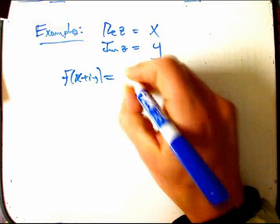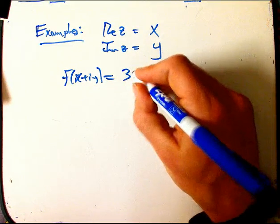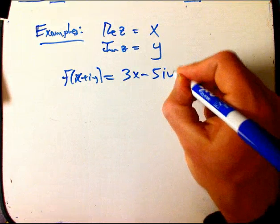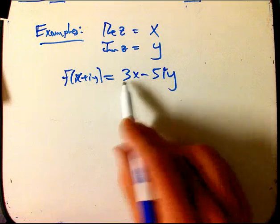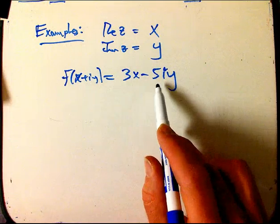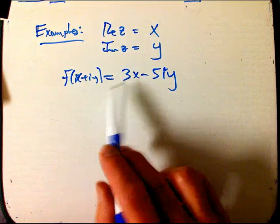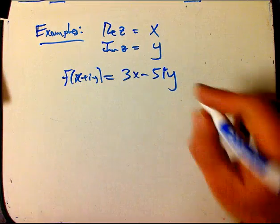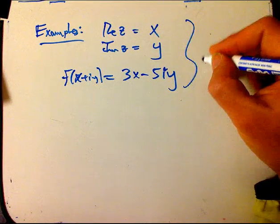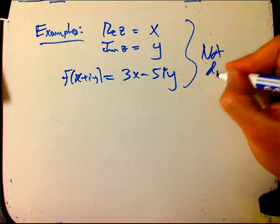Or f of, let's see, x plus iy is some sort of artificial combination, 3x minus 5iy, with these guys being different. Then if I just break it apart in the x and y and I just put random coefficients here, none of those are going to be differentiable in this complex sense.